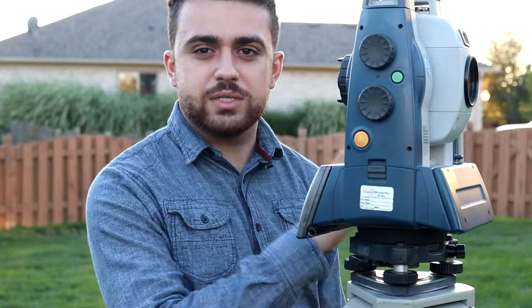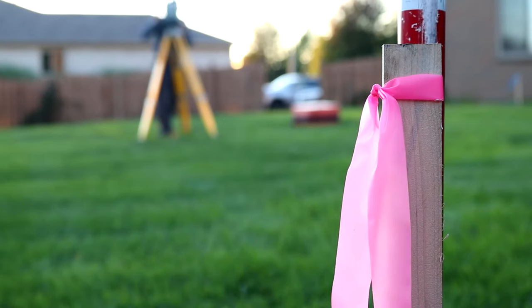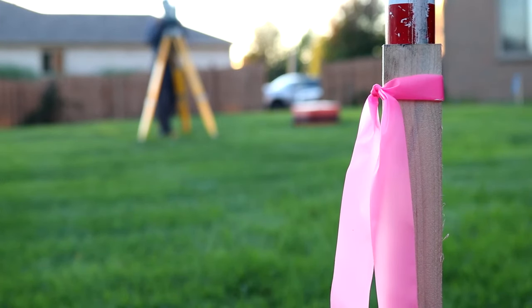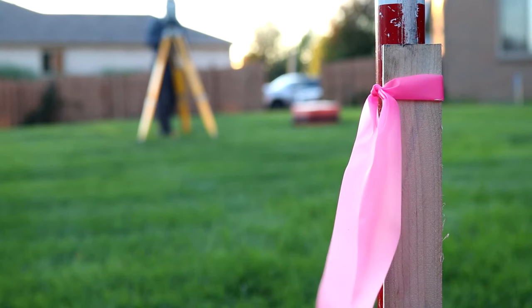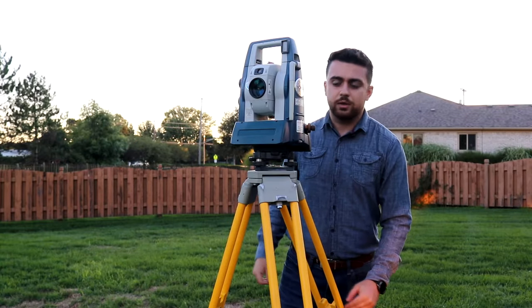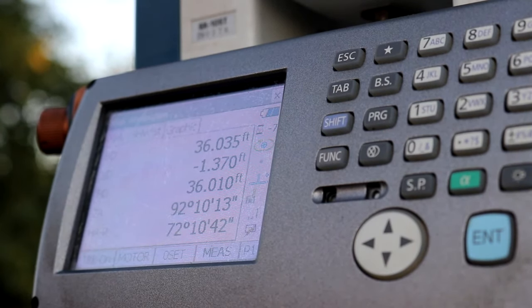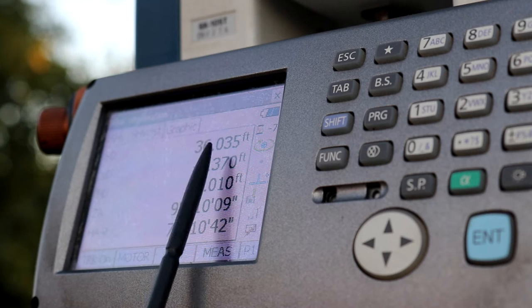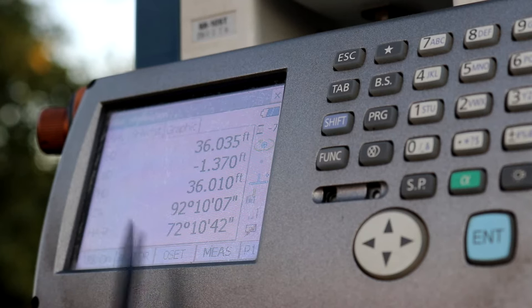Alright, now we're going to sight our unknown point. Okay, and here's what we're reading. From the location of where we're occupying to our set unknown point, the distance is 36.035. The angle between point green and this unknown point are 72 degrees, 10 minutes and 42 seconds. Alright, let's go ahead and zero out our angle.